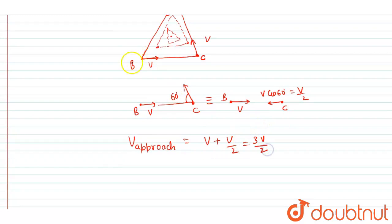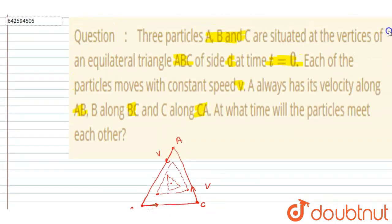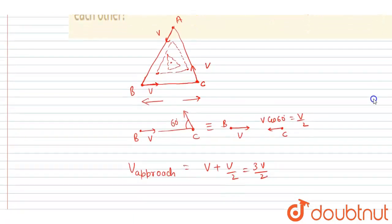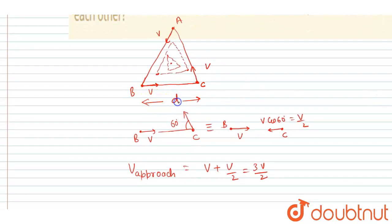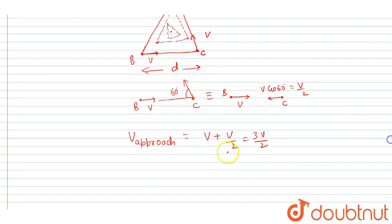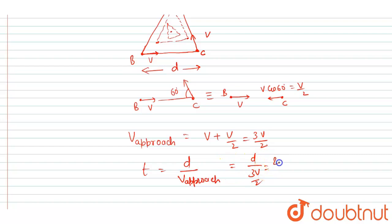The distance between the two particles is the side length d, as given in the question. The time is simply the distance divided by the velocity of approach. The velocity of approach is 3v/2, so the time is d divided by 3v/2, which gives 2d/3v.